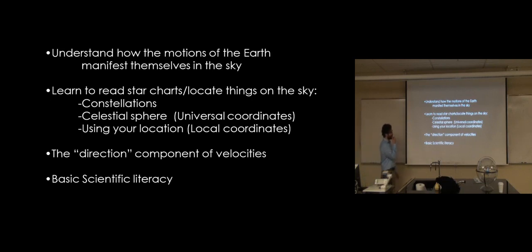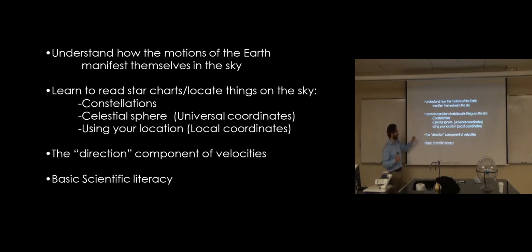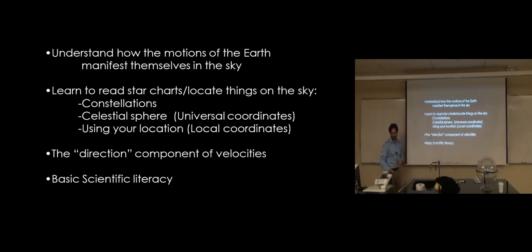Then we'll learn three ways of locating stuff on the sky: by constellations, this idea of painting an equivalent system that's kind of like latitude and longitude on the Earth in the sky — basically celestial latitude and celestial longitude. And finally, if you're an amateur in a dark room or planetarium, just how to point based on your own body as the center of the universe, so local coordinates.